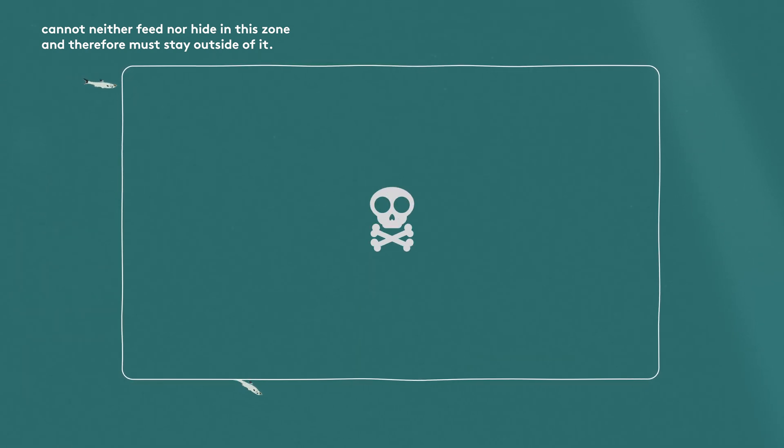If there is no oxygen to breathe, anchovies, which require a certain amount of oxygen in their environment, cannot feed nor hide in this zone and therefore must stay outside of it.